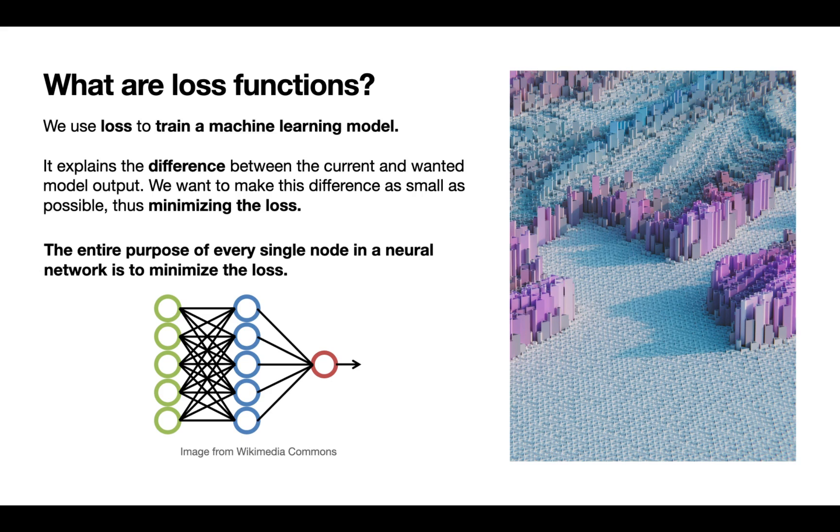The entire purpose of every single node in a neural network is working to minimize the loss. Over time, this is how the model will get better, because it will make its prediction and then compare that prediction to the wanted prediction. Then we make tweaks to lower the difference between the current and the wanted.